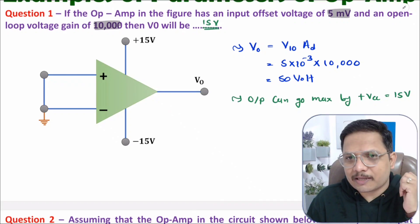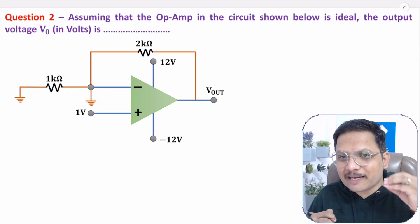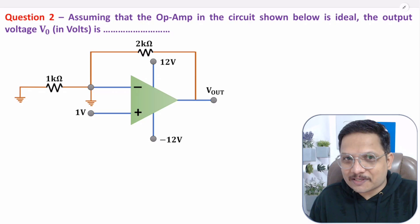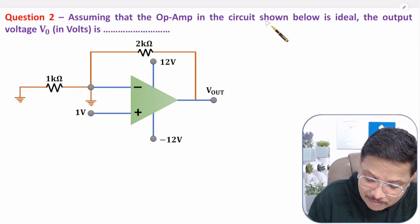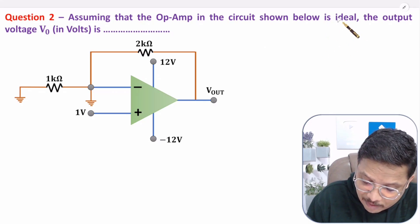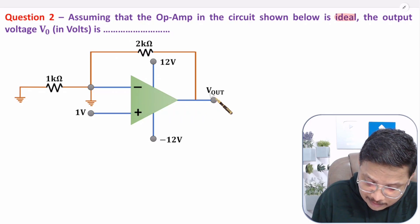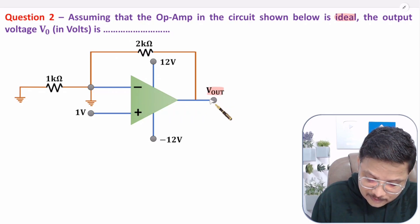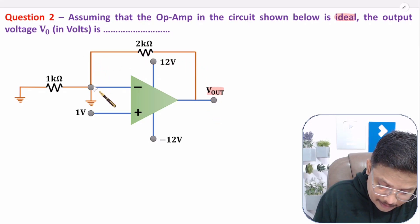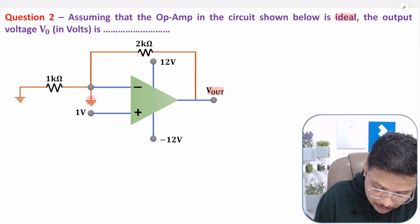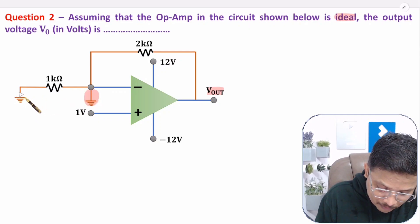Let us solve the second question now. This second question is also quite interesting and is based on interesting fundamentals. The question is: assuming that the op-amp in the circuit shown below is ideal, the output V0 is how much? First, you need to see this circuit carefully. We have a feedback, and at the minus terminal we have a ground. Then we have another resistance.